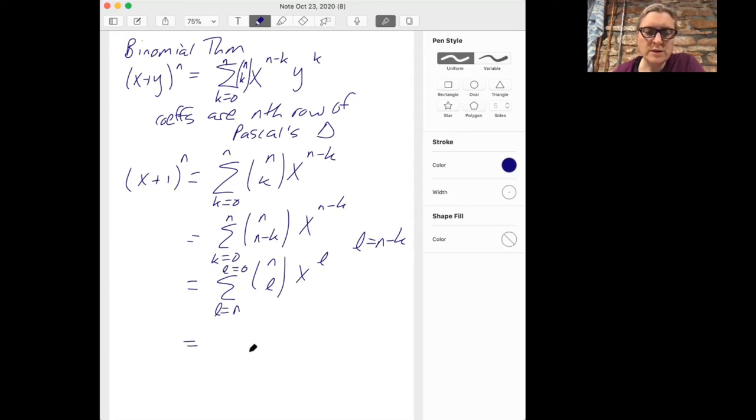And so that's just a fancy way of saying that we have the sum of the monomials x to the l as l goes from zero to n multiplied by the coefficient n choose l.